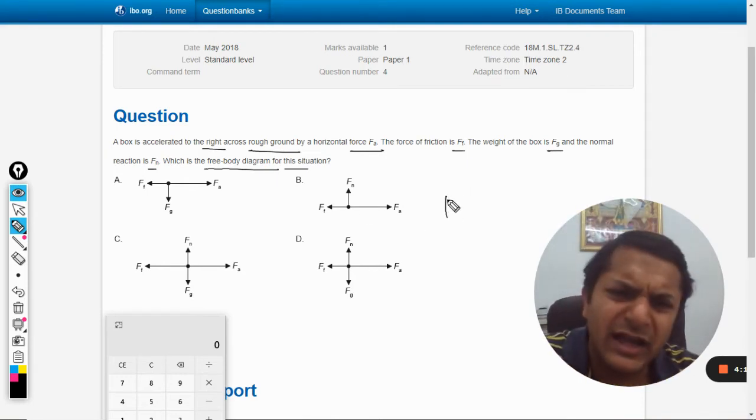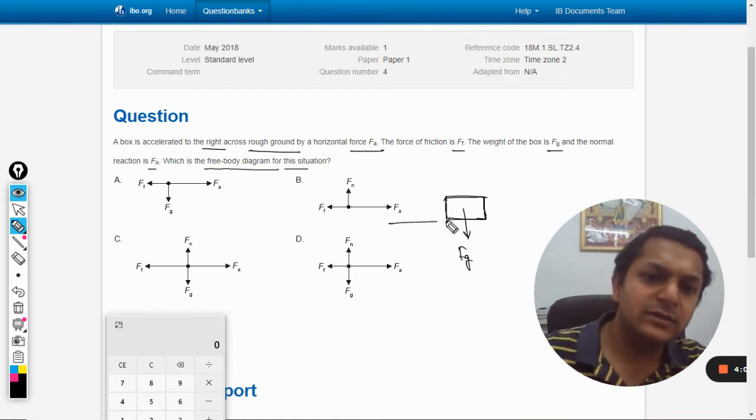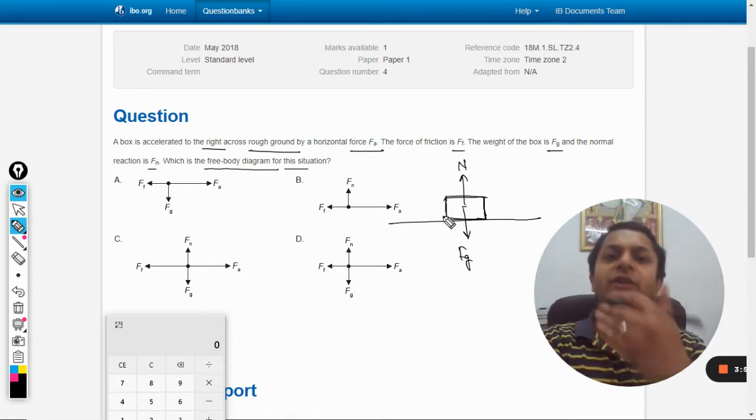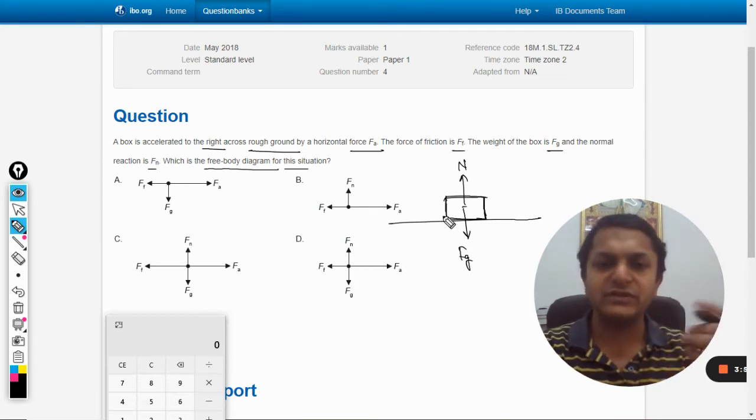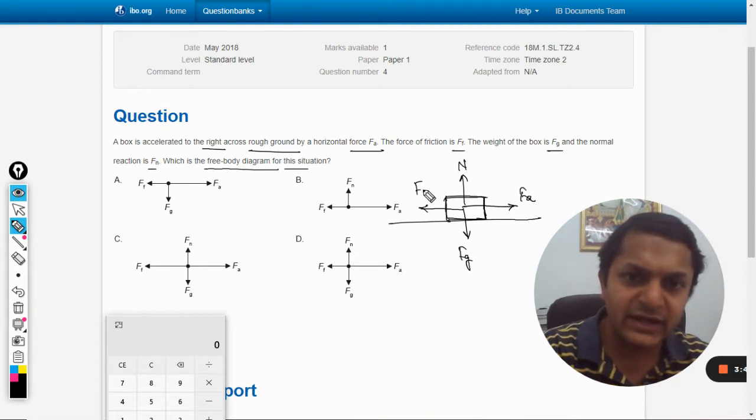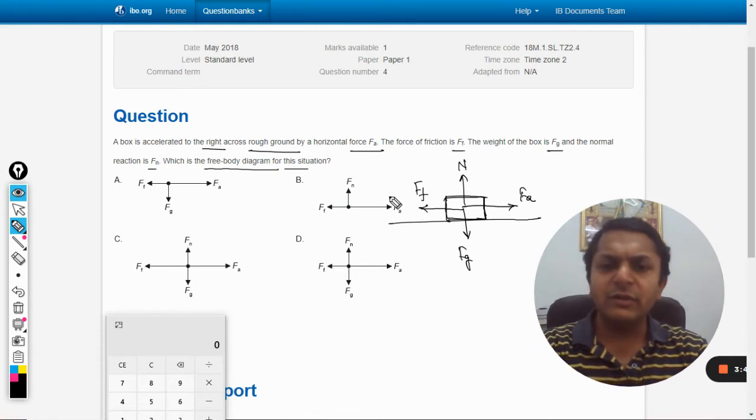Let us say this is the body. The weight will be acting downwards - this is the surface. The weight will be acting downwards, so this is bound to be the normal reaction that the body is getting from the surface. There is an applied force which is Fa, and friction will be acting obviously in the opposite direction.